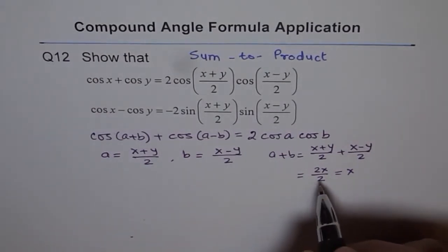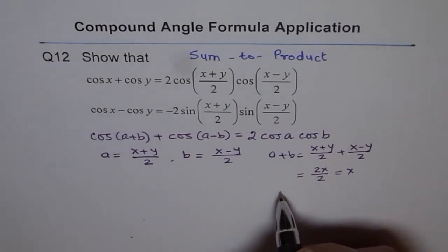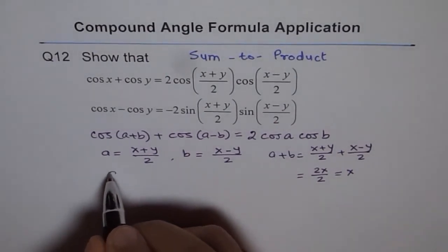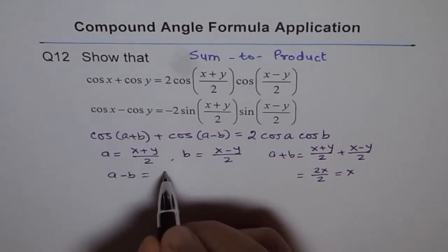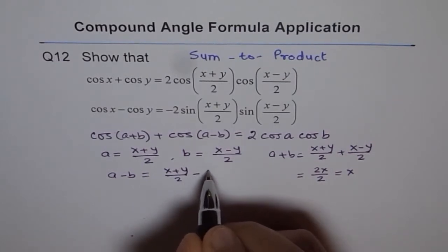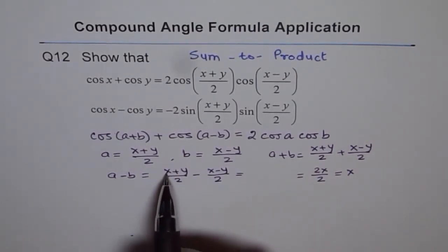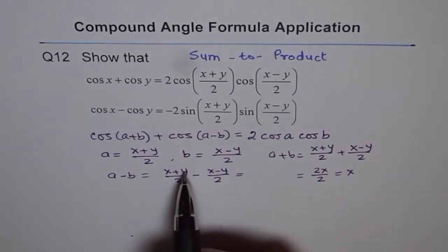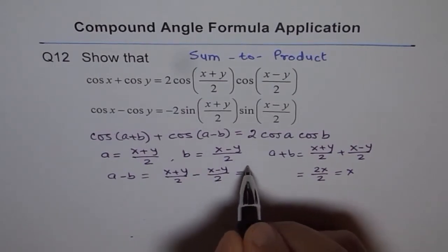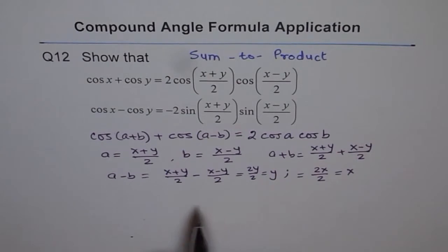Similarly, if I do a minus b, what will I get? Let me do a minus b here. Let's do it here. a minus b will give us x plus y by 2 minus of x minus y by 2. Now, x minus x is 0 and y minus and minus makes it plus. So y plus y is 2y. So we get 2y by 2, which is y. So that means a minus b is y.